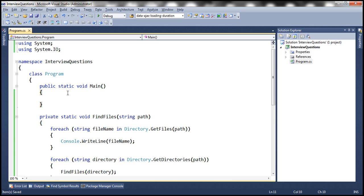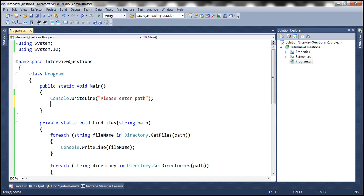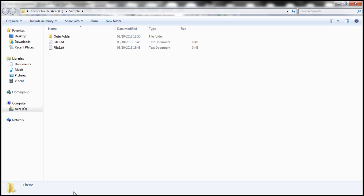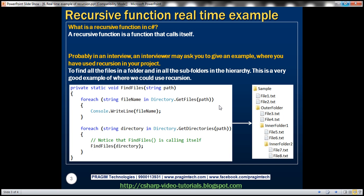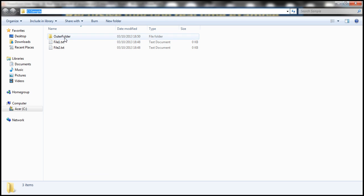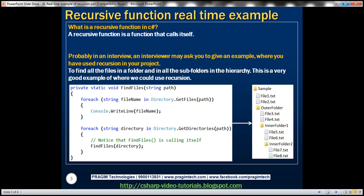Now let's prompt the user to enter the path. Console.WriteLine please enter path. And now on my machine I have already set up a folder structure like this. So within C drive sample look at that I have got an outer folder and then two files within that another folder and then two files basically the same structure.